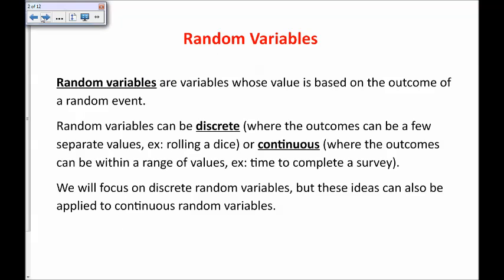Random variables are variables whose value is based on the outcome of a random event. Random variables can be discrete, where the outcomes can be a few separate values. Like rolling a dice, you get one, two, three, four, five, or six separate values. You can't roll a dice and get one and a half or pi.